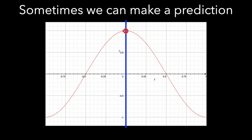On the other hand, sometimes we can make a prediction. In the case of this function, which was f of x equals cos pi x, whether we approached from the left or the right, the y values were going to the same value.